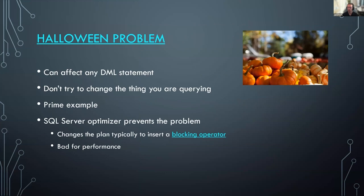I'll take a couple minutes for this. The Halloween problem was identified in the late 1970s by engineers at IBM — it's not SQL Server specific, it's database management specific, and there's actually a Wikipedia page for it. The original problem was giving raises to employees making less than $25,000 a year — a 10% salary increase. What they found was it updated some of them by 10% over and over until their salary exceeded $25,000, updating the same row multiple times. That's clearly not the intent of the operation.